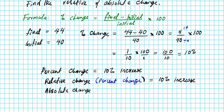The last answer is the absolute change. Your absolute change can be determined by finding the difference between your final and initial values: final minus initial. If you look at the calculation, the numerator component of the fraction — which is 4 — represents the absolute change, because it is the difference between the final and the initial values.